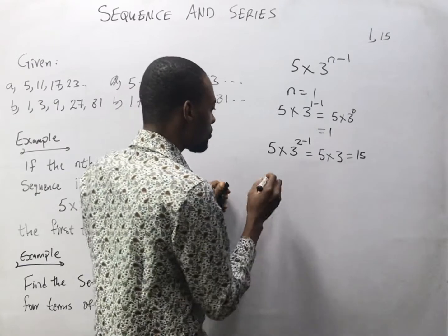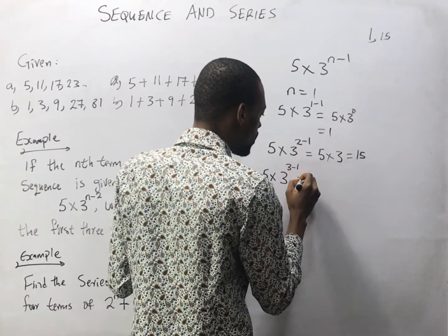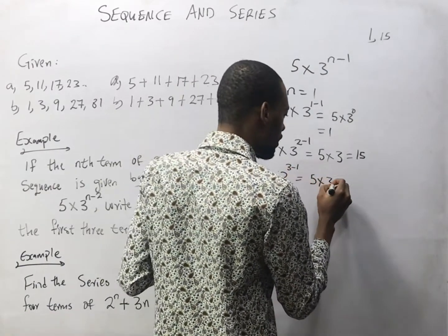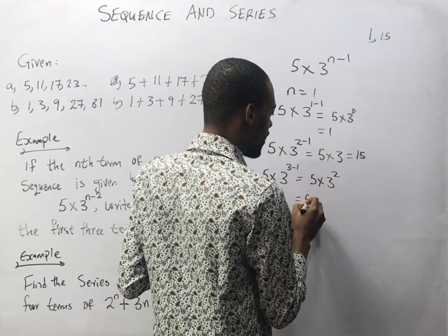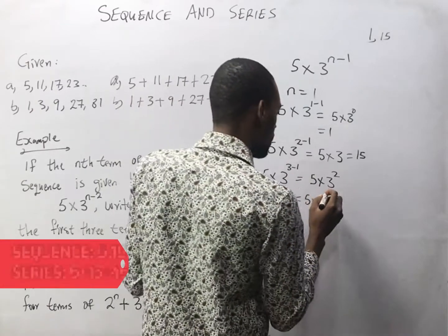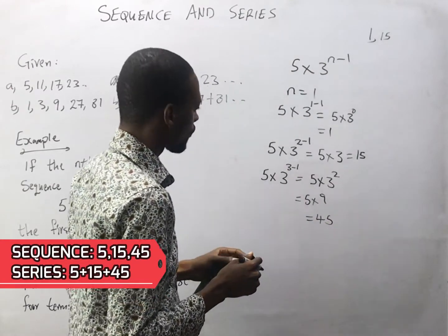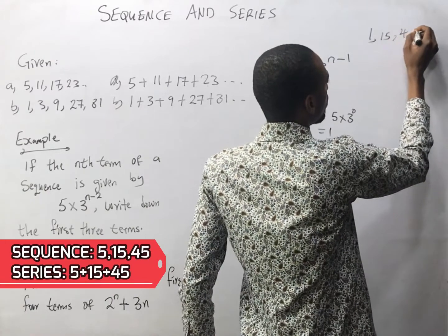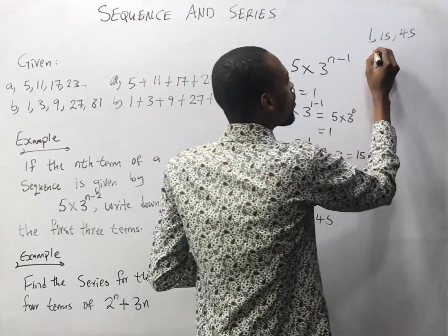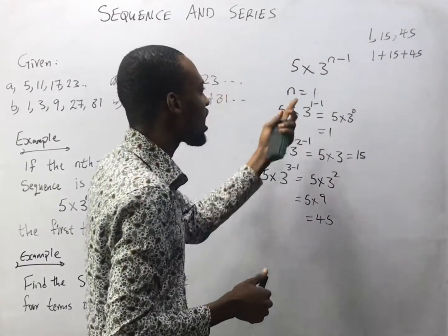For the third term, n equals 3: 5 times 3 to the power of 2 equals 5 times 9 equals 45. So the first three terms are 5, 15, and 45. And if we are looking for the series of the first three terms, it will simply be 5 + 15 + 45.